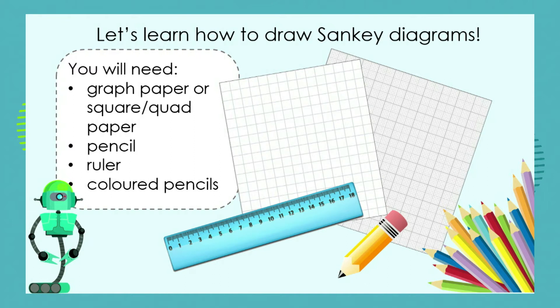What you need in order to draw a Sankey diagram — it's much easier if you use graph paper or ordinary square or quad paper. The squares in the graph paper are going to help us work out percentages far easier and give us a guide to how wide those arrows should be. We also need a pencil and a ruler.